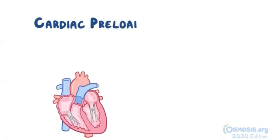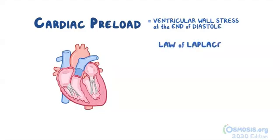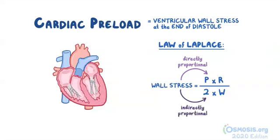Cardiac preload can be defined as the ventricular wall stress at the end of diastole. It can be calculated using the law of Laplace, which states that wall stress equals pressure (p) times radius (r) over 2 times wall thickness (w). In other words, cardiac preload is directly proportional to end-diastolic pressure and radius of the left ventricle, and indirectly proportional to 2 times the ventricular wall thickness.